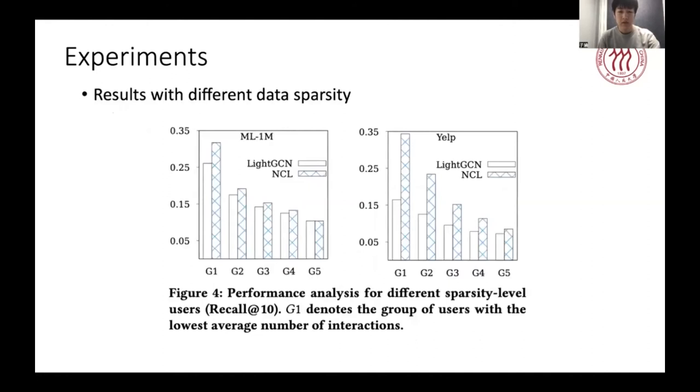Besides, we split the users in Amazon-Book dataset into five groups based on their interaction number, while keeping the total number of interactions in each group constant. Then we compare the recommendation performance of NCL and LightGCN on each group. We find that the performance of NCL is consistently better than LightGCN. Meanwhile, the performance gap becomes bigger when the dataset is sparser. This implies that the proposed neighborhood modeling techniques benefit more on sparse interaction data.